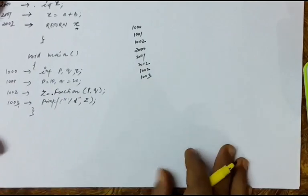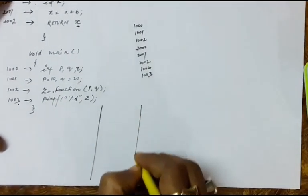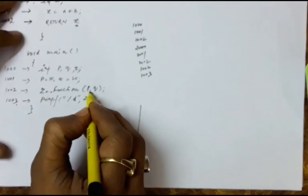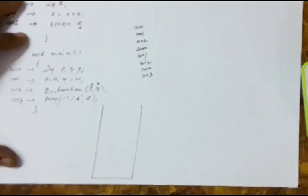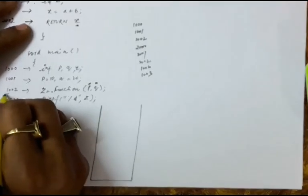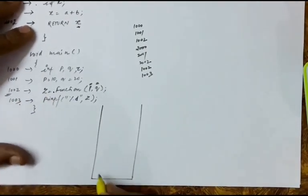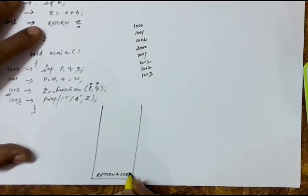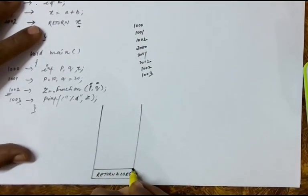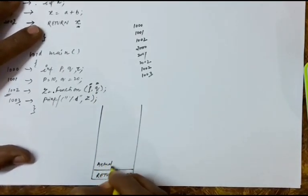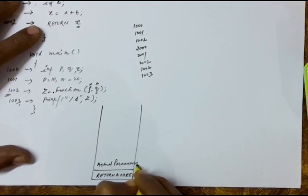Whenever you call a function, on the stack region in the RAM, an activation record is created. This is the function call, and these are the parameters with which you have called the function. Since at location 1002 this function has been called, the very first thing stored is the return address — you should know at what point to come back after the function completes. You should also know the actual parameters: p and q are the actual parameters.